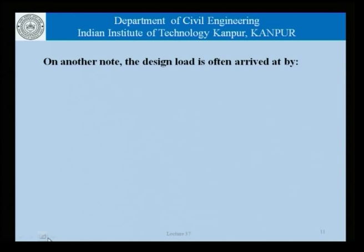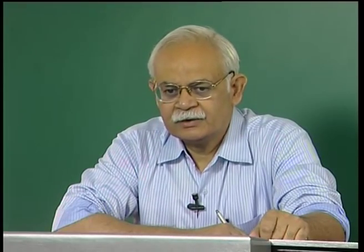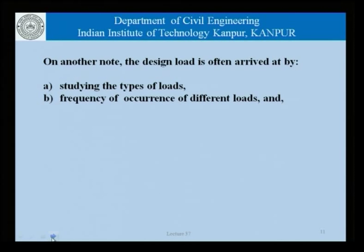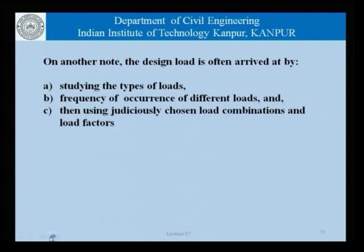How do we arrive at a design load? This comes from studying the different types of loads that the structure is likely to be subjected to — dead loads, live loads, earthquake loads, wind loads, snow loads, and so on, depending on where the structure is located. We also study the frequency of occurrence of different loads, how frequently earthquakes occur in a region, how heavily it snows, and so on. Using judiciously chosen load combinations and load factors, we combine different loads — dead loads, live loads, and earthquake loads could be one combination; dead loads, wind loads, and live loads is another.